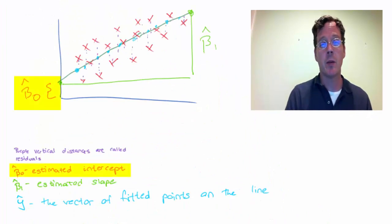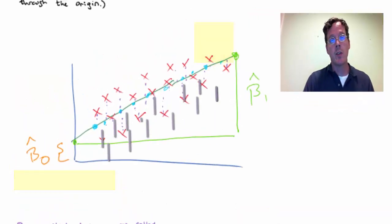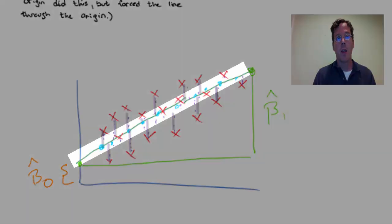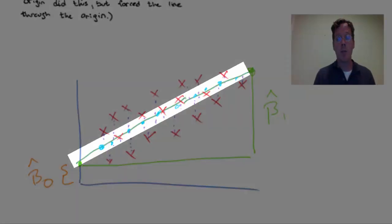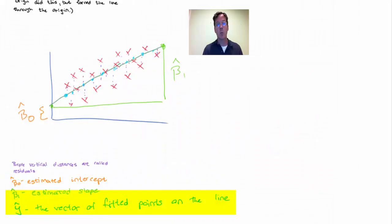Let's let beta 0 denote the intercept and beta 1 denote the slope. The distances between the observed points and the lines are called the residuals. And the points, the fitted values on the lines, where the points hit that line are called the fitted values. Let's call those y-hat values.